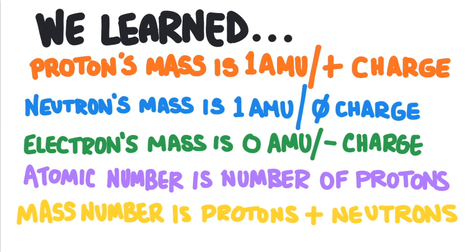Atomic number is the number of protons in the nucleus of an atom. Mass number is the number of protons plus the number of neutrons. Thanks for watching.